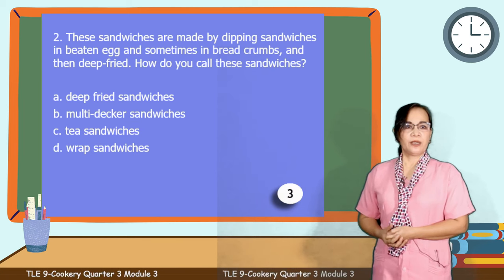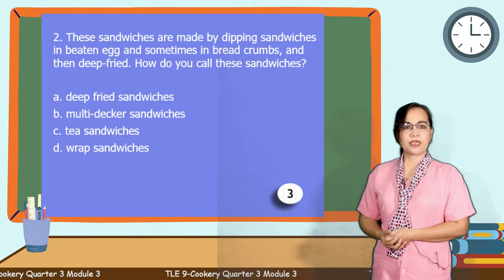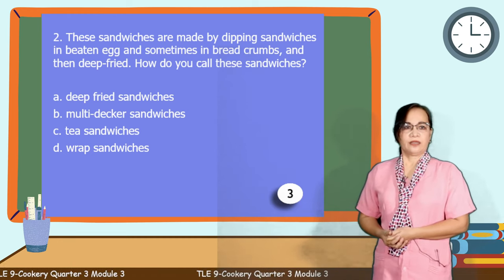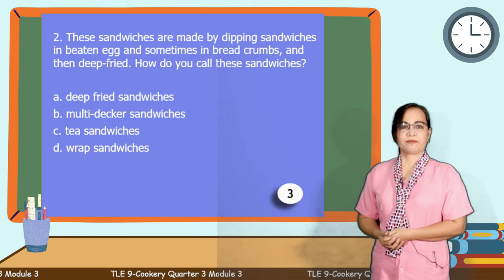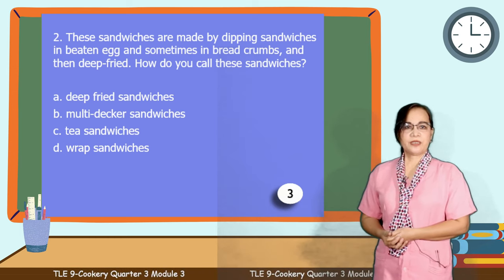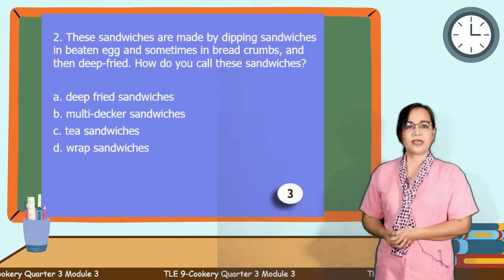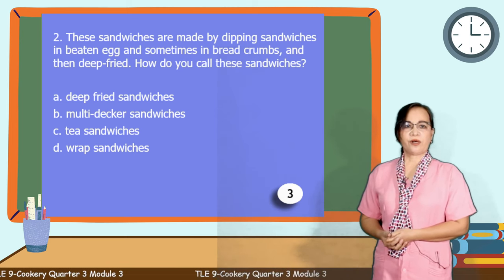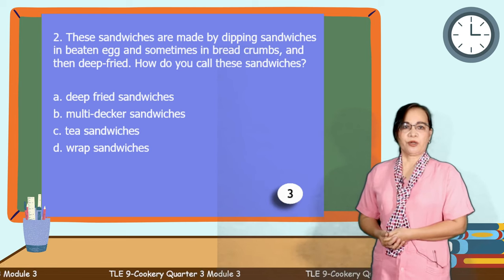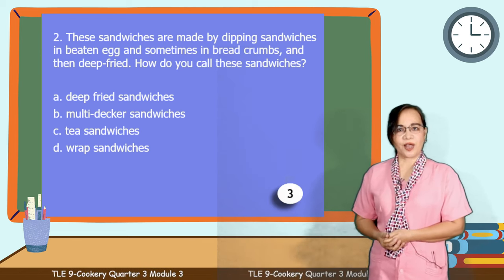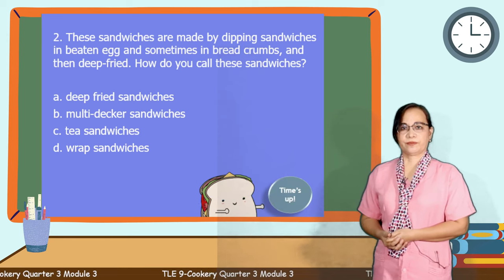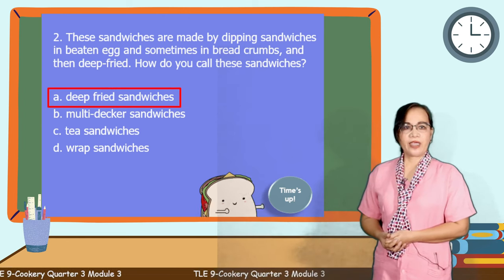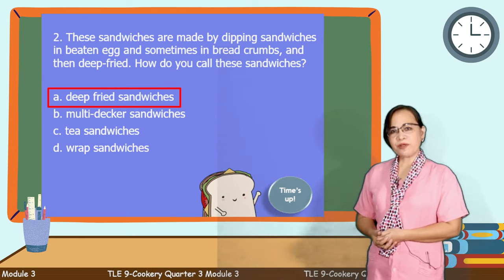Question number 2: These sandwiches are made by dipping sandwiches in beaten egg and sometimes in breadcrumbs and then deep-frying them. How do you call these sandwiches? Is it letter A, deep-fried sandwiches? Letter B, multi-decker sandwiches? C, tea sandwiches? Or letter D, wrap sandwiches? Time's up. It's letter A, deep-fried sandwiches. Very good, learners.